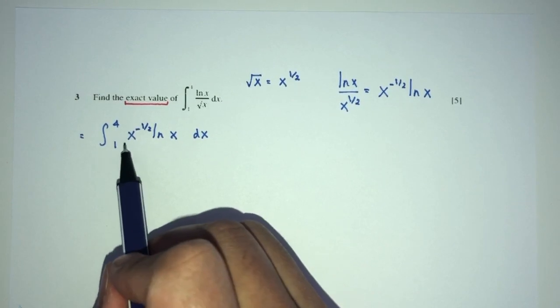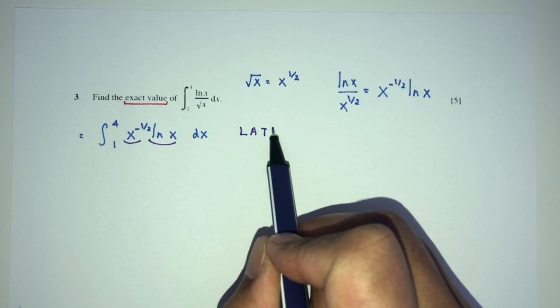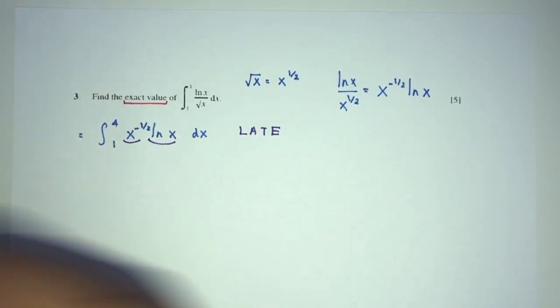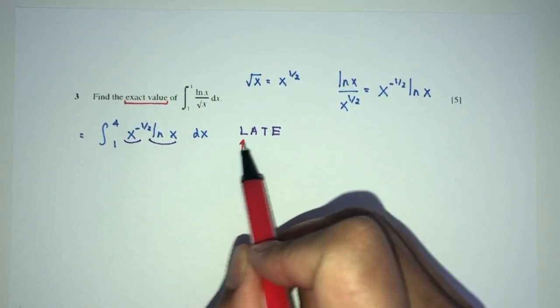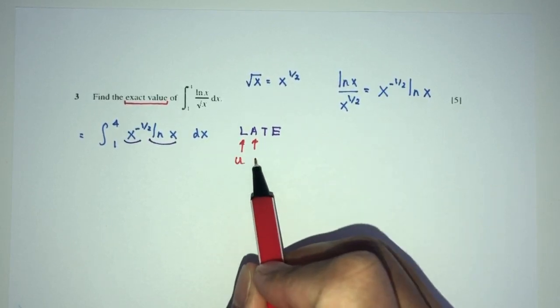Now, this is algebraic, this is logarithmic. We can use the LATE rule here. This is over here. And this will be over here. Now, whichever happened first will be my u and this will be my dv.